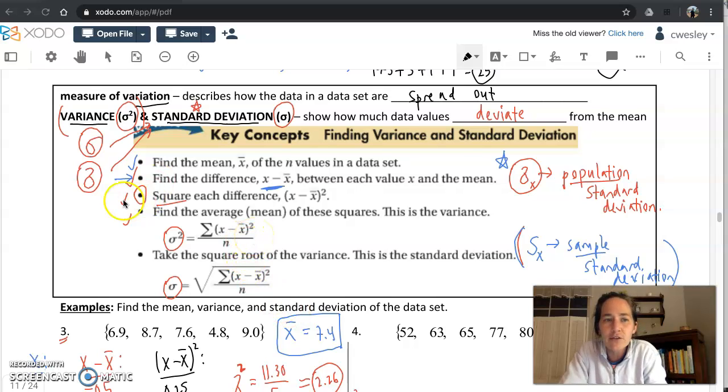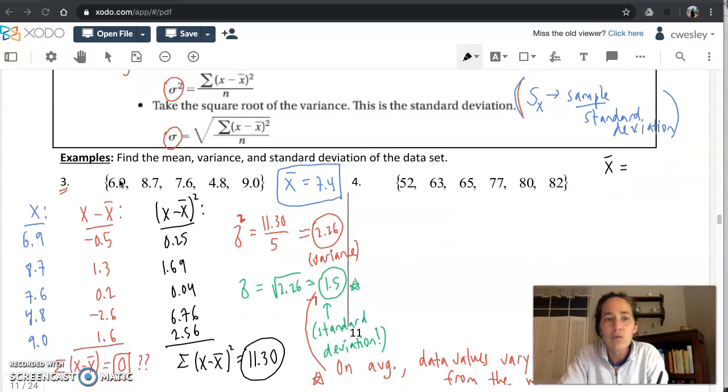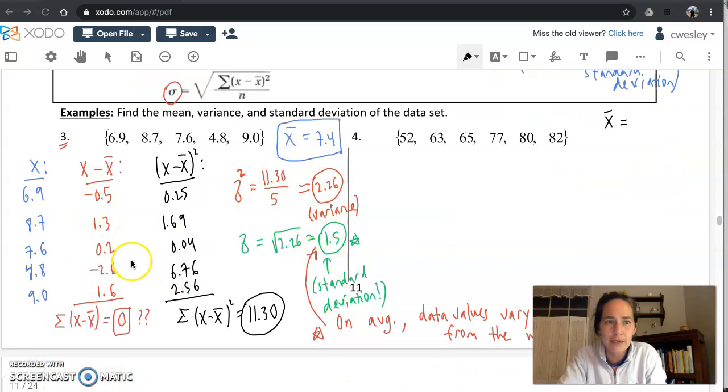What does standard deviation tell you? It's the Greek lowercase letter sigma and it gives you the average deviation of the values from the mean. When we solved number three by hand by making a table, we found the sigma squared first, the variance was 2.26 and we just had to square root it to get the standard deviation, to get that average variation.